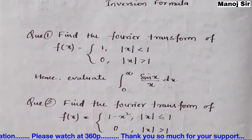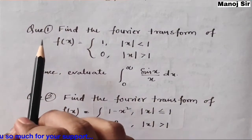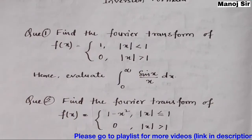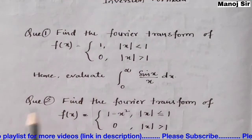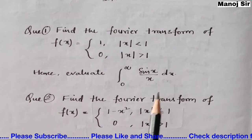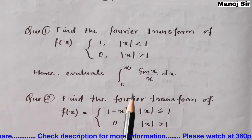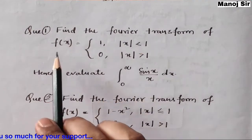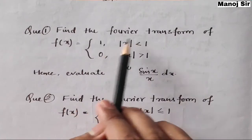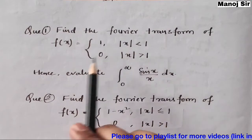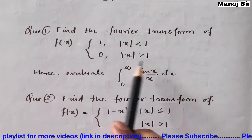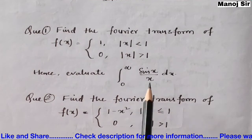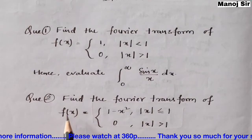This is video number one. In video number two we are going to solve a very important problem in Fourier transform. The first problem says: find the Fourier transform of f(x) equals 1 when mod of x is less than 1, and f(x) equals 0 when mod of x is greater than 1. After finding the Fourier transform, we need to evaluate the integral from 0 to infinity of sin(x) upon x dx.